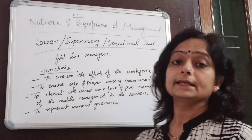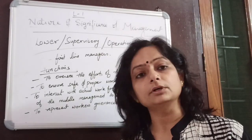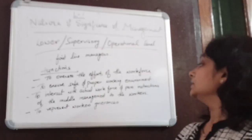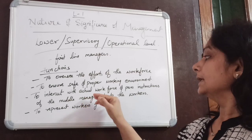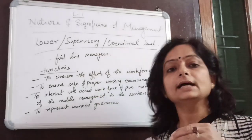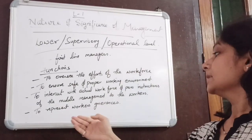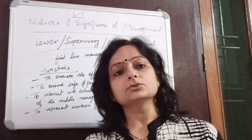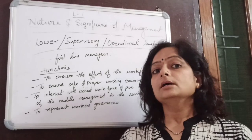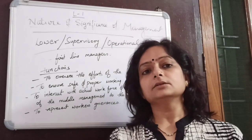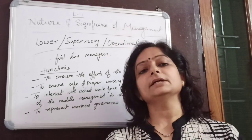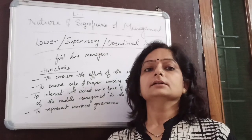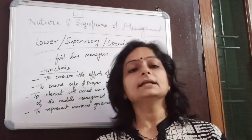Lower level management is also responsible for ensuring a safe and proper working environment for workers. They interact with the actual workforce and pass instructions from middle management down to the workers. They also represent workers' grievances — if there is any misunderstanding or grievance among workers, it is the duty of lower level managers to communicate such issues to the middle level, so that middle management is aware of everything happening at the ground level. This completes the different levels of management and their functions.